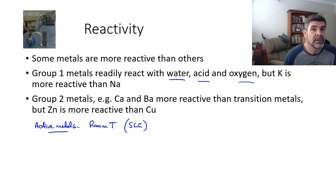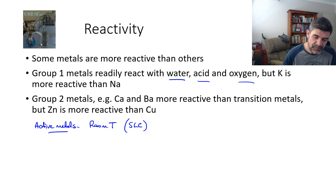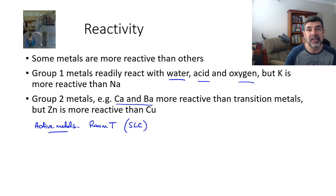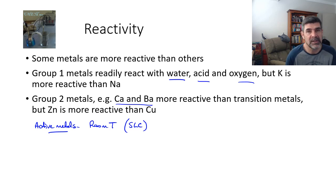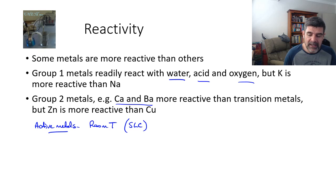In Group 2, there are also indicators of some quite active metals. Calcium and barium, for example, are both substances which readily react with water, acid and oxygen as well, but are not as reactive as those reactions that we see from the Group 1 metals. These Group 2 metals are also more reactive than the transition metals.